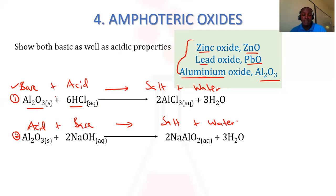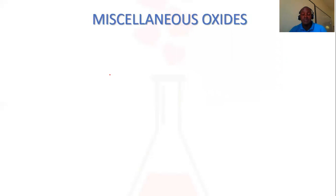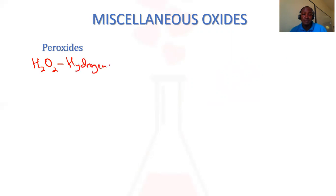So amphoteric oxides can act as bases and can act as acids. That's why we say they show both basic and acidic properties, depending on what they are reacting with. Then lastly, we have miscellaneous oxides — these are oxides we did not include among the top four. We have the peroxides — these are oxides that usually contain two oxygen molecules attached by a single covalent bond. For example, hydrogen peroxide, commonly used in lab preparation of oxygen, and sodium peroxide, a pale yellow solid.